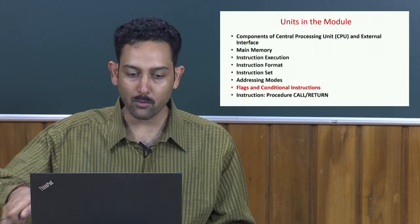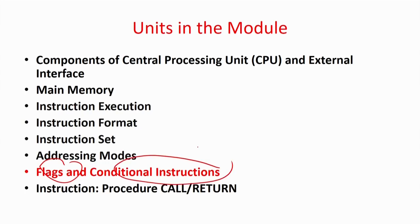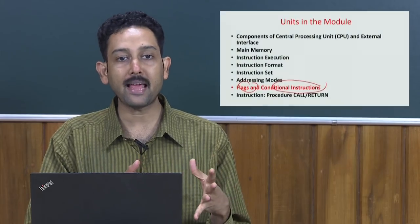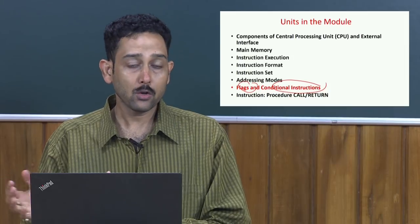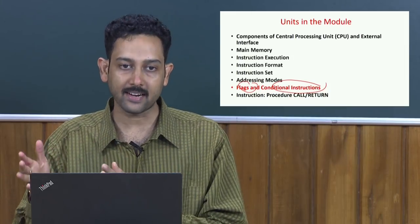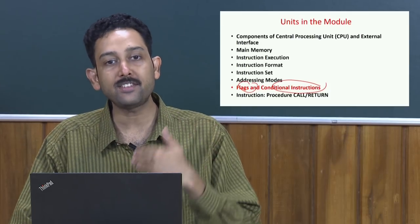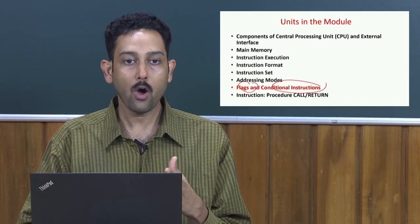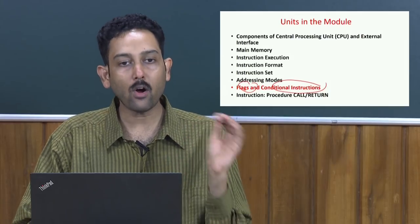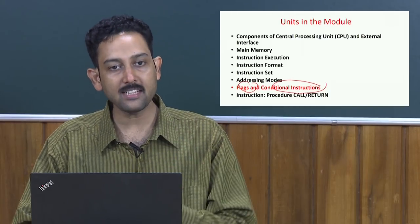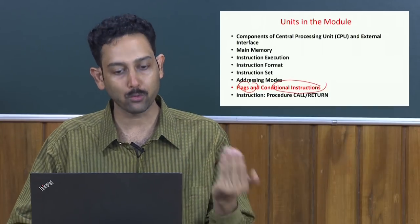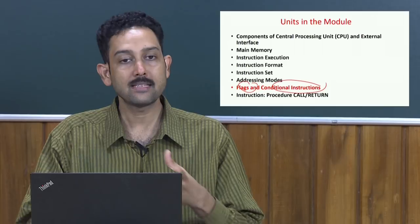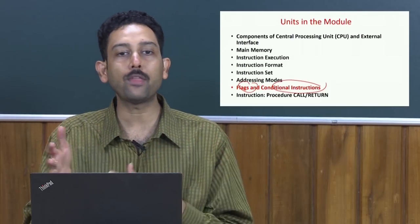Along with conditional instructions, in this unit we are going to look at flags and conditional instructions. Conditional instructions are very similar to if-then-else statements, while conditions, jump loops, etc. Whenever we say something like 'if x is greater than y then do something,' in hardware, a condition is checked depending on certain flag registers. There are some bits which are set or reset depending on some conditions, and the conditional instruction checks those flags and then decides what to do.